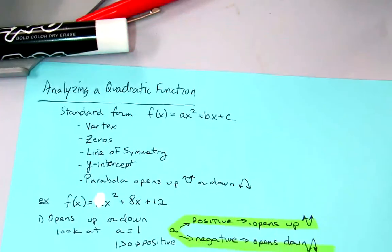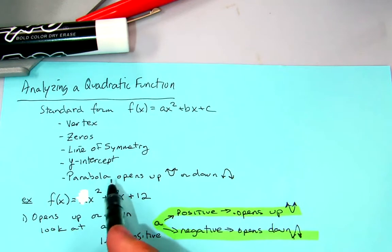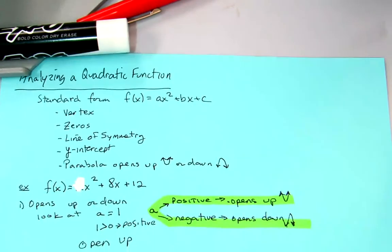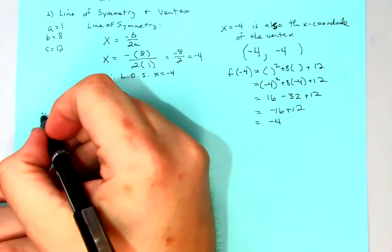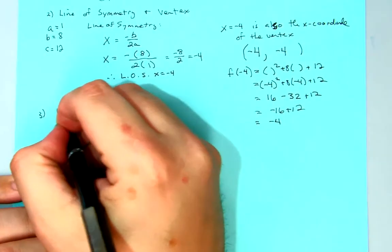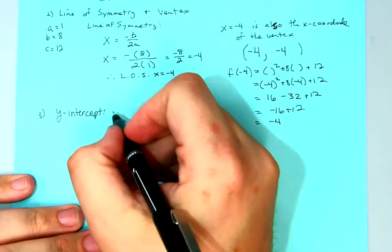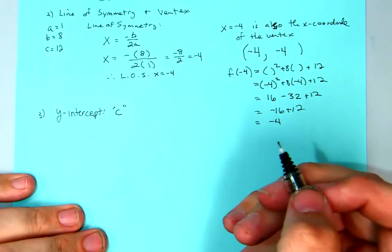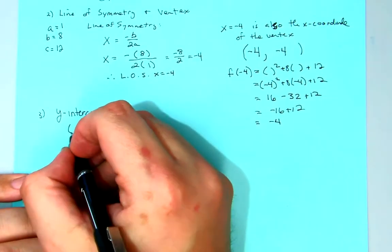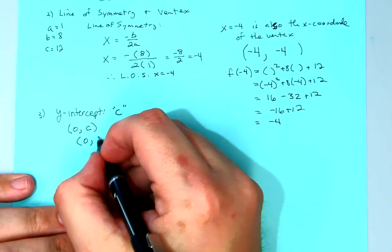Now we need to find the y-intercept. The y-intercept is just equal to c. So whatever the c value is, that's our y-intercept. So the y-intercept is at (0, c), which is (0, 12).